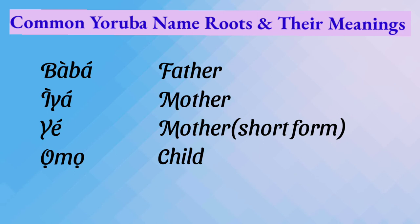Examples with Baba: Babajide, Babarin De, Babatunde. Examples with Iya: Iyabo. Examples with Iye: Yejide, Yerin De, Yetunde. Then Omo means child — examples include Omotunde, Omoniji, Omolara.